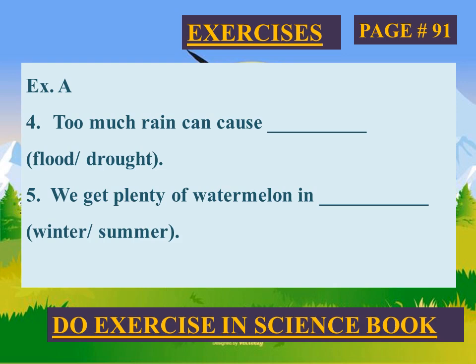Page number 91, blanks number four: too much rain can cause a flood — right option is flood. Number five: we get plenty of watermelon in summer — right option is summer. Do the exercise in the science book.